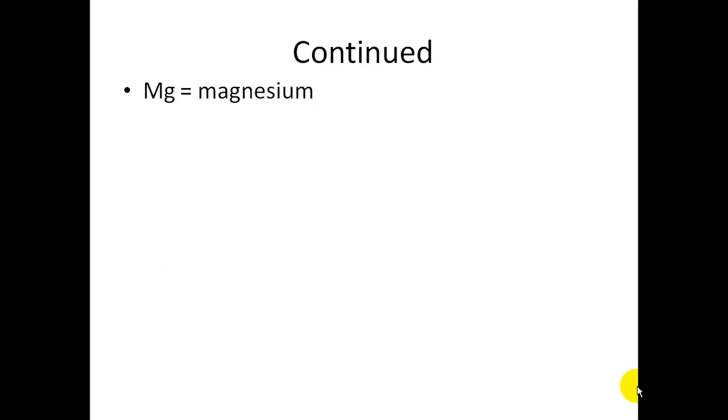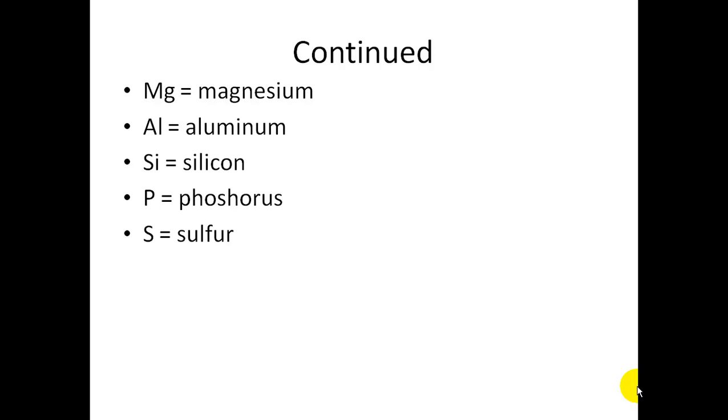Moving on. Magnesium, Mg. Aluminum, AL. Silicon, SI. Phosphorus, just P. Sulfur, S. Chlorine, CL. Argon, AR. Potassium is K. Calcium, CA.